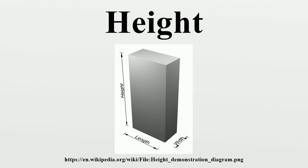Height is a measure of vertical distance, but has two meanings in common use. It can either indicate how tall something is, or how high up it is. For example, the height of the building is 50 meters, or the height of the airplane is 10,000 meters. When used to describe how high something like an airplane or mountain peak is from sea level, height is more often called altitude. Height is measured along the vertical axis between a specified point and another.